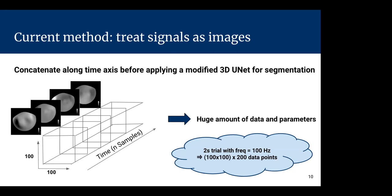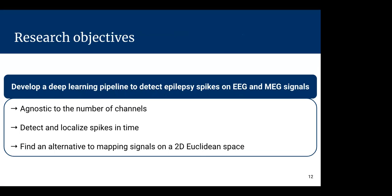The research objectives are manifold. First, we want to develop a deep learning pipeline to detect epileptic spikes on both EEG and MEG signals. We want this pipeline to be agnostic to the number of channels, to handle several electrode densities. We also want to localize the spikes on the time axis to help epileptologists know when those spikes occur. And most importantly, we want to find an alternative to mapping signals onto Euclidean space, to reduce the amount of data.